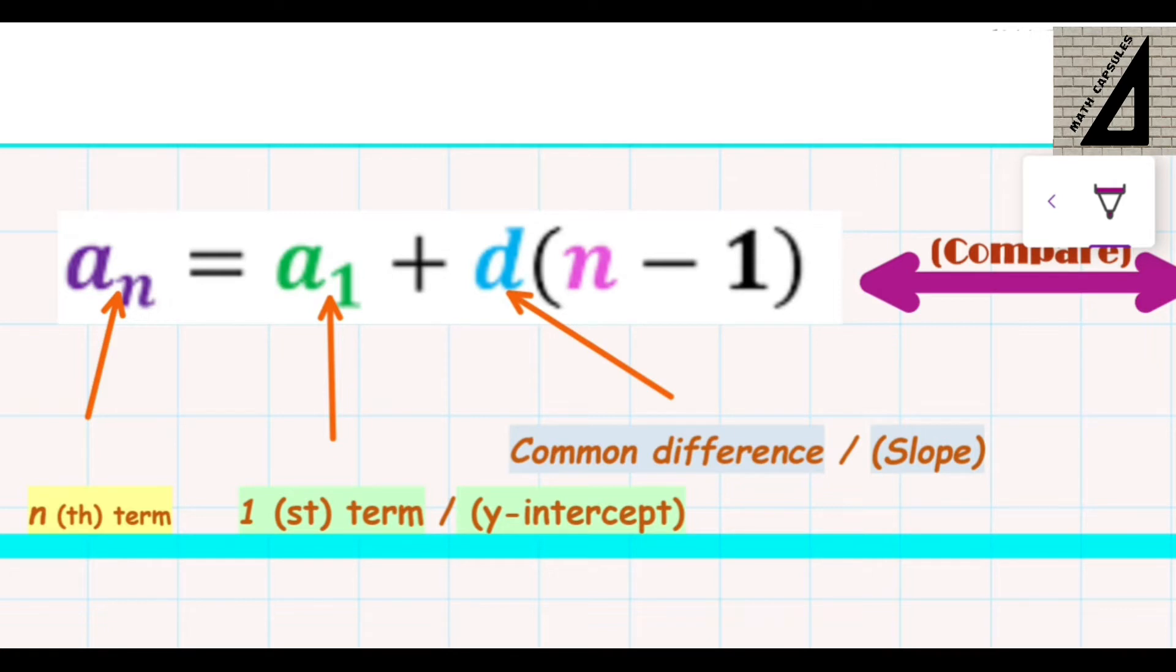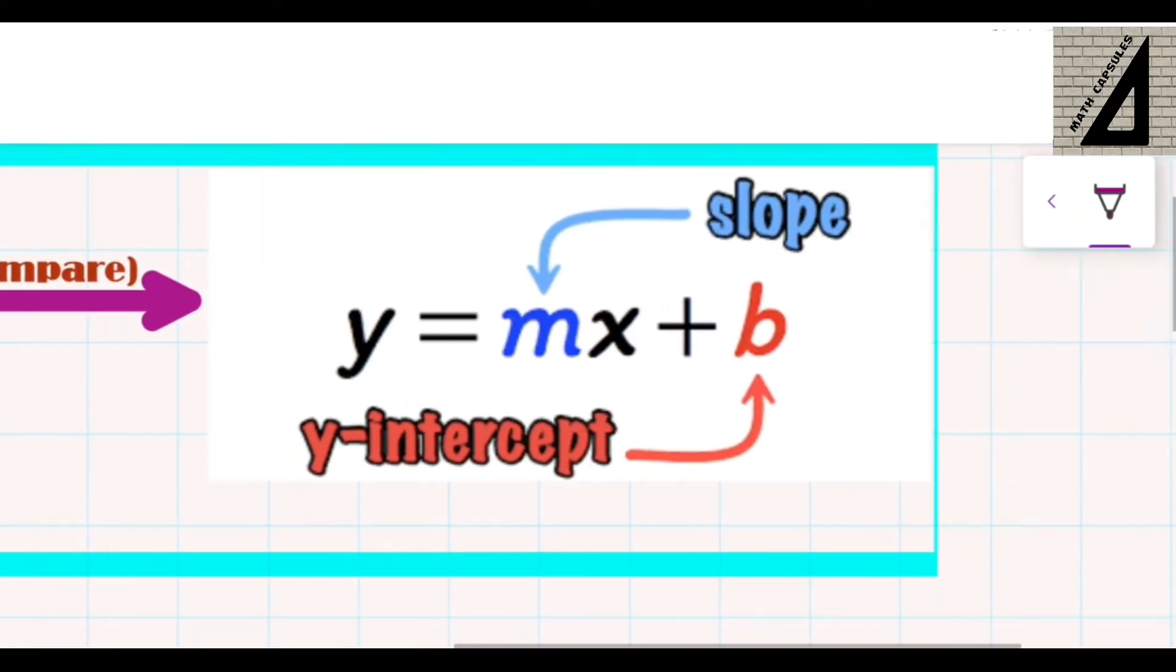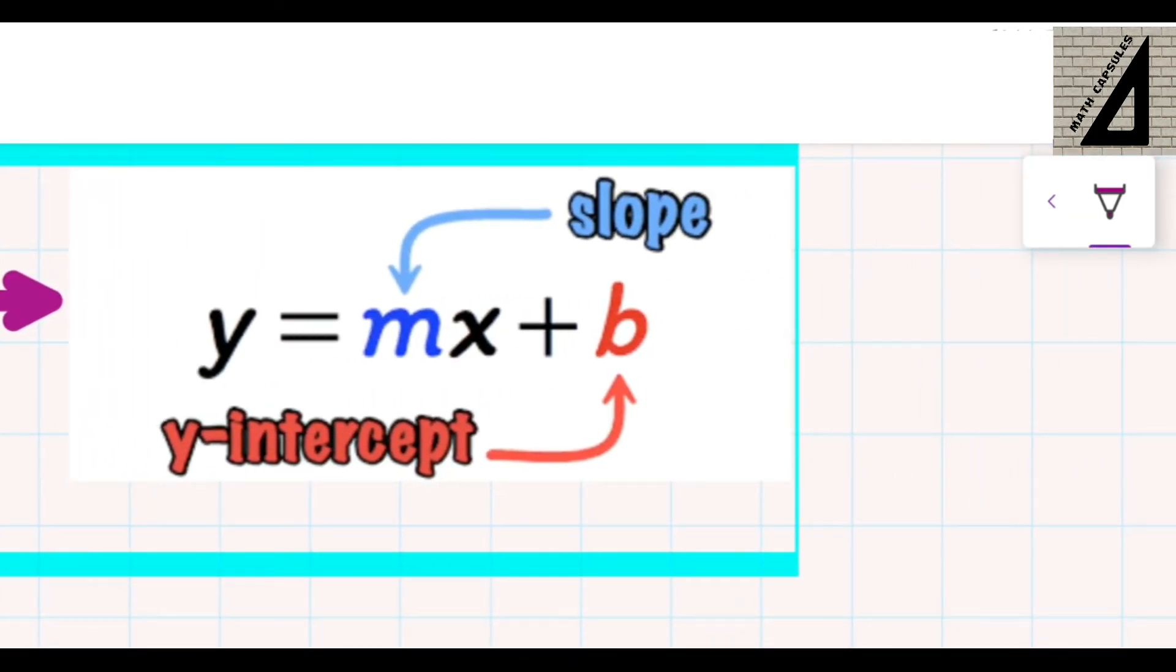Now if we want to compare this with the slope-intercept form of a linear function, we know that y equals mx plus b, where m is the slope and b is the y-intercept.